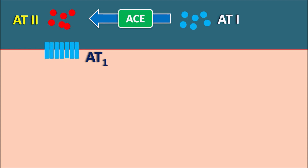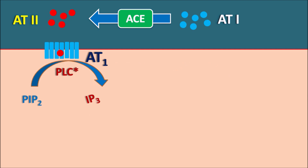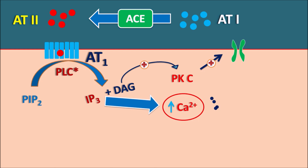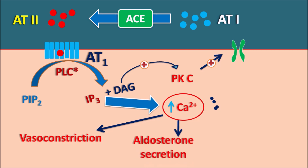Angiotensin 2 binds to AT1 receptors, which stimulate the phospholipase C system. Phospholipase C converts phosphatidylinositol bisphosphate into two components: IP3 (inositol triphosphate) and DAG (diacylglycerol). DAG activates protein kinase C, which opens ion channels bringing calcium inside the cell. IP3 directly increases calcium release from internal stores like the sarcoplasmic reticulum. Both mediators increase intracellular calcium, producing vasoconstriction in vascular smooth muscle and increasing aldosterone secretion, resulting in increased sodium reabsorption at the renal tubules.